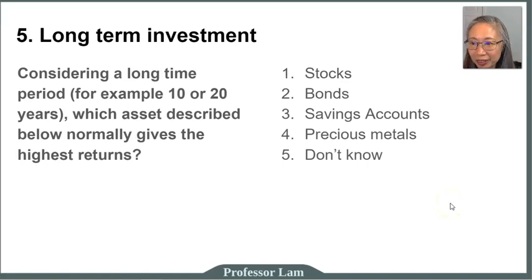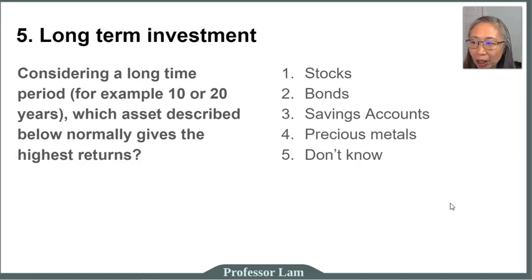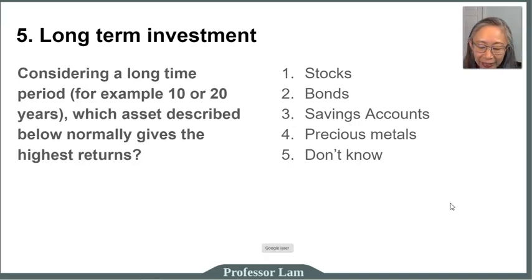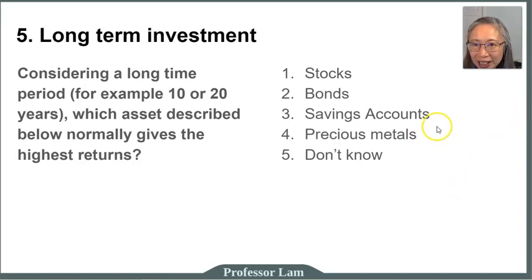In regards to long-term investment, consider a very long time period — let's say 10 or 20 years. Which asset will normally give you the highest return? Pick one if you think stocks, two if bonds, three if savings account, four if precious metals — which includes gold, silver, and other precious metals — and five is I don't know. Pause if you need more time. We're going to review the answers.